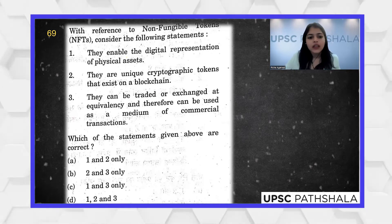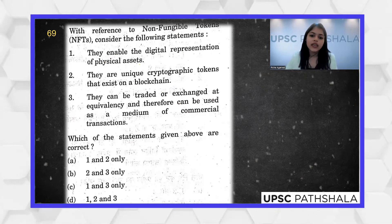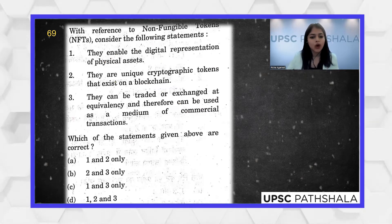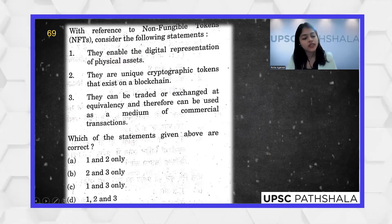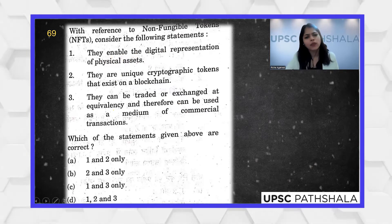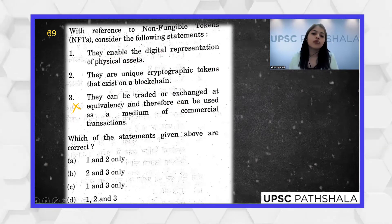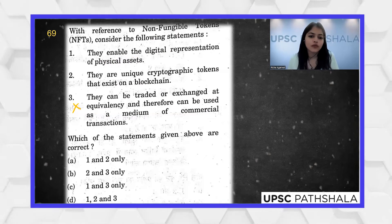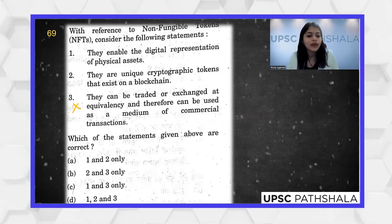Look at the three statements: they enable the digital representation of physical assets; they are unique cryptographic tokens that exist on a blockchain; they can be traded or exchanged at equivalency. Statement three is very incorrect — it refutes the meaning of non-fungibility. Non-fungibility means they are unique and cannot be traded at equivalency.